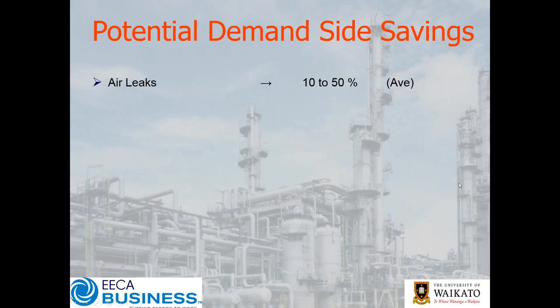Number one, top of the rank, is always going to be air leaks — potentially 10 to 50% reductions. There are not too many sites where it's less than 10%. If you are on a site which has a very good leak rate — very, very small — you will know about it; you'll see it in the housekeeping. When we do this training, generally what you'll find is within the first five minutes in the plant room, there are things that will point clearly to whether you could be looking at a best-in-class system. Very rare, very few and far between, but they do exist.